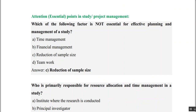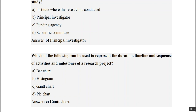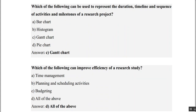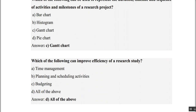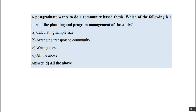Review questions: Which factor is NOT essential for planning and management? Sample size reduction is never a good idea — so that is not essential. Who is primarily responsible for allocation and time management? The principal investigator. Which can represent duration, timeline, and sequence? A Gantt chart. Which improves research efficiency? Time management, scheduling, and budgeting — all of the above. For a community-based thesis, planning includes calculating sample size, arranging transport, writing the thesis — all of the above. That is all for Chapter 14.